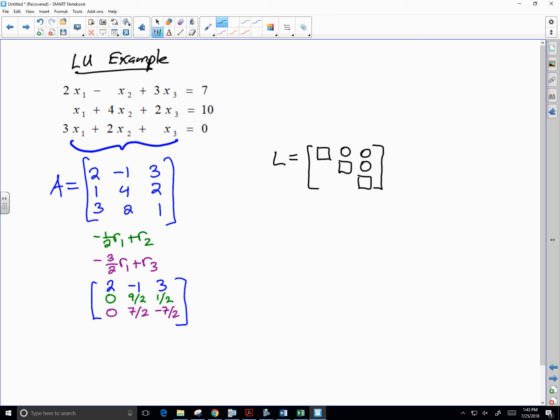So what we do is we take each of the entries that make up the first column and divide it by the pivot of that column. So 2 divided by 2 is 1. 1 divided by 2 is 1 half. 3 divided by 2 is 3 halves. It should actually correspond to the values that you used to row reduce to begin with.